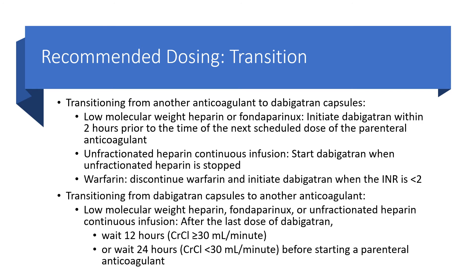How to transition from another anticoagulant to dabigatran: From low molecular weight heparin or fondaparinux, initiate dabigatran within 2 hours prior to the next scheduled dose of the parenteral anticoagulant. From unfractionated heparin continuous infusion, start dabigatran when unfractionated heparin is stopped. From warfarin, discontinue warfarin and initiate dabigatran when the INR is less than 2. When transitioning from dabigatran to low molecular weight heparin, fondaparinux, or unfractionated heparin, wait 12 hours after the last dose of dabigatran if creatinine clearance is ≥30 mL/min, or wait 24 hours if creatinine clearance is less than 30 mL/min.